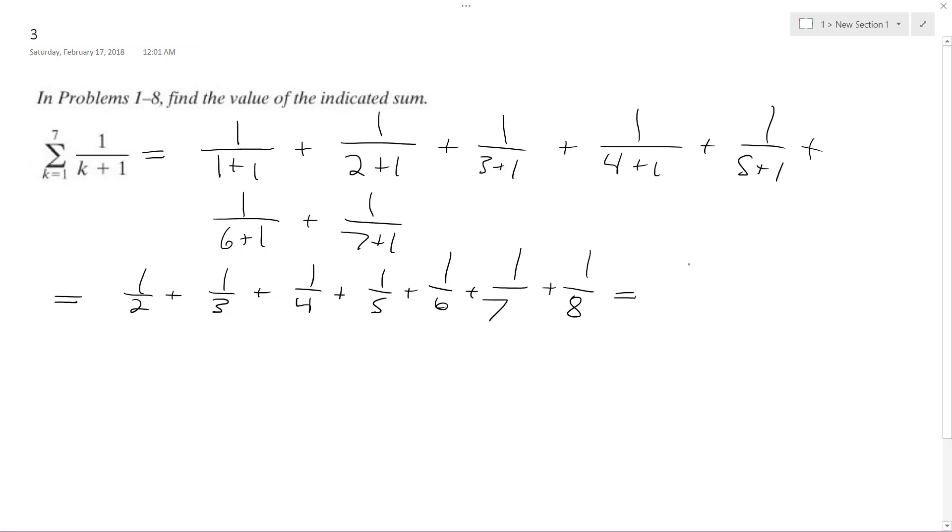And this comes out to be 481 over 280. The 280 is the LCD amongst all of these that we could find, and this is the most reduced form we have.